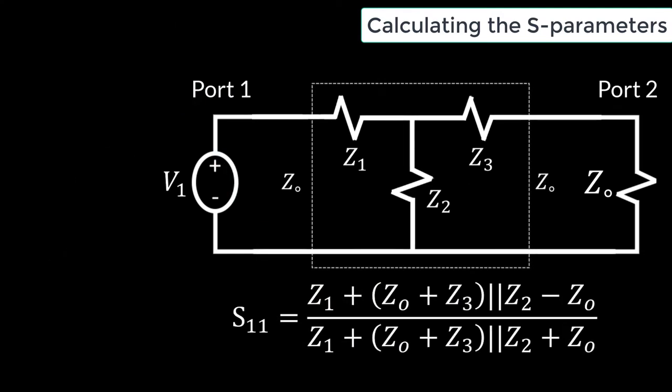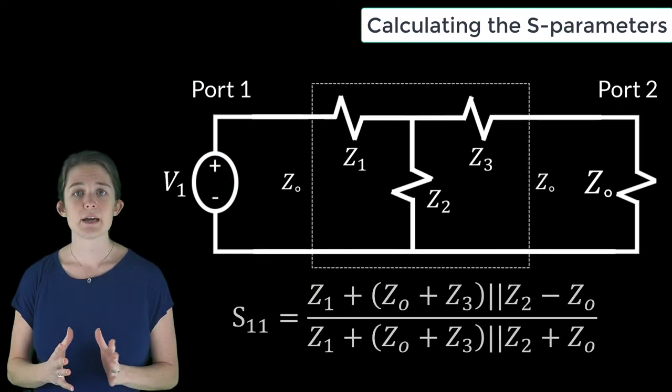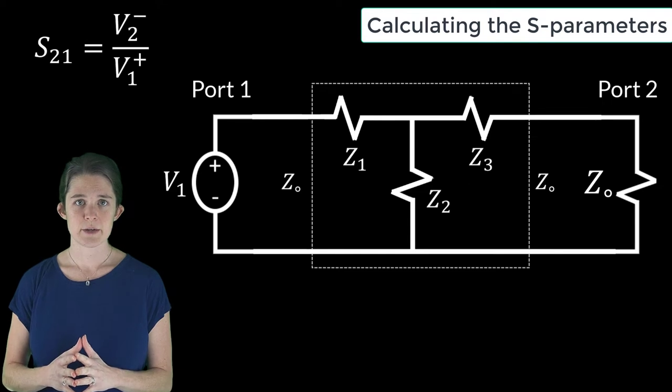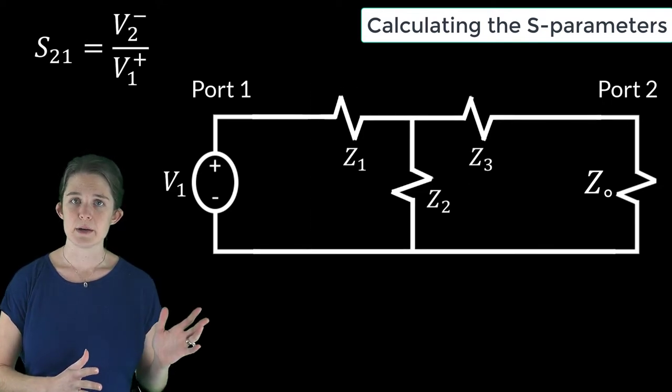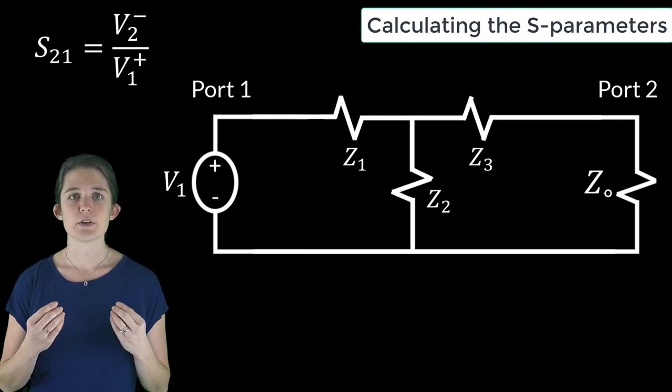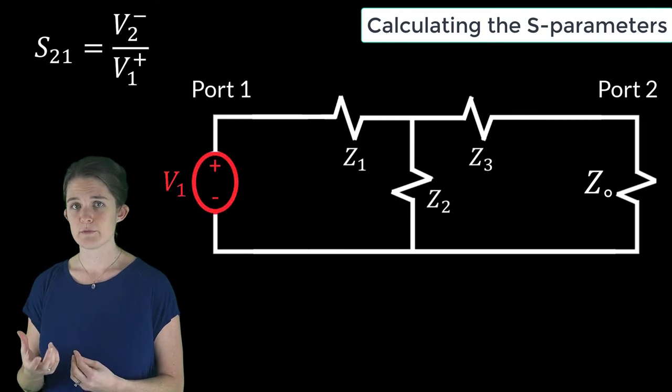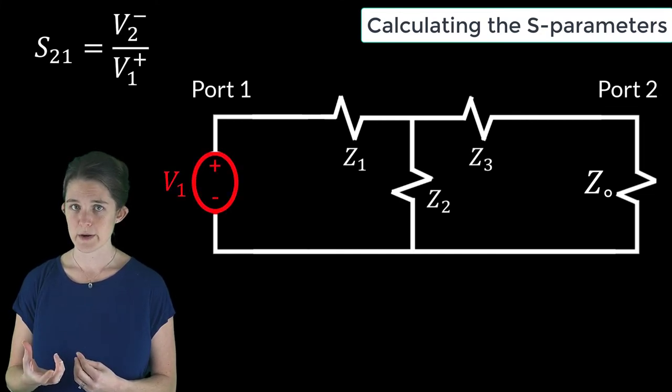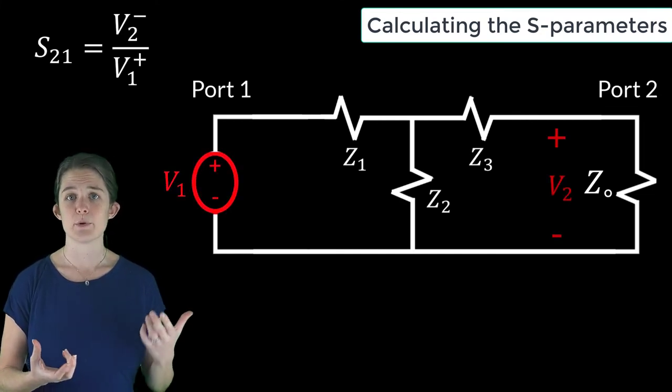We can also find S21 from this measurement setup. To calculate S21, we can use circuit analysis to show that the relationship between the total port voltage at port 1, V1, and the total voltage at port 2, V2, is given by this equation.